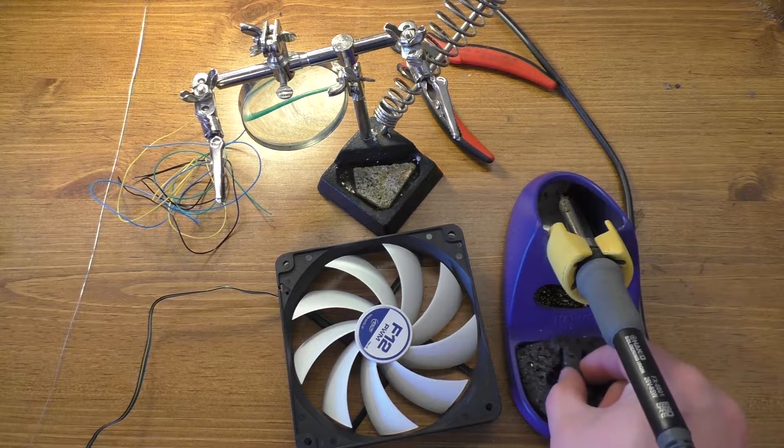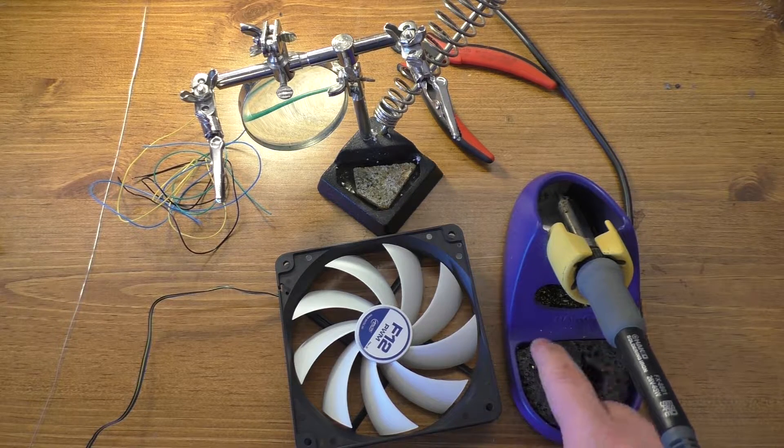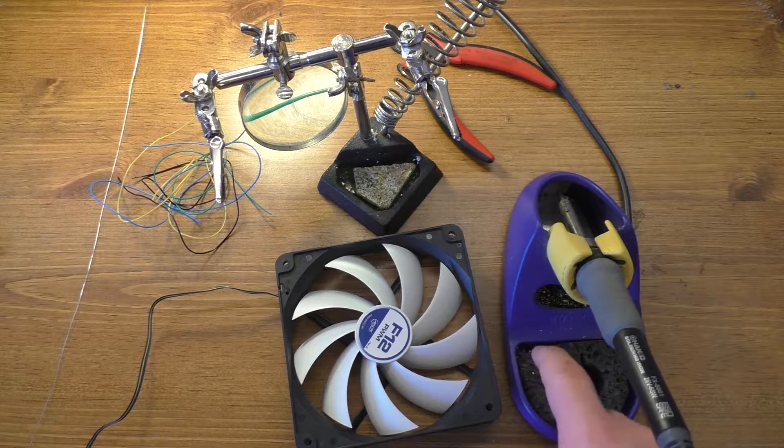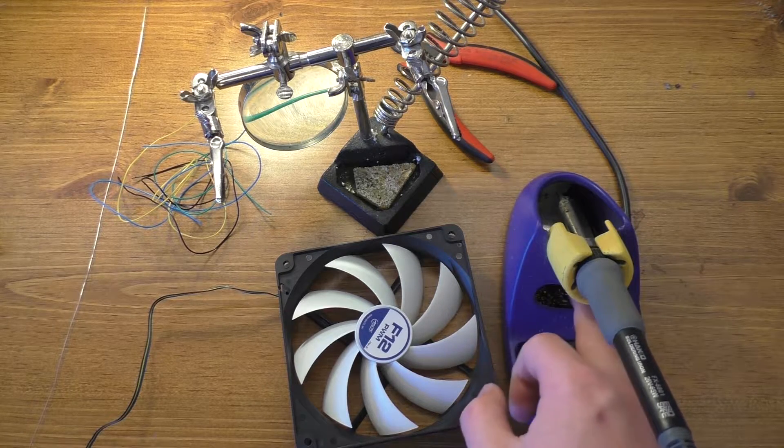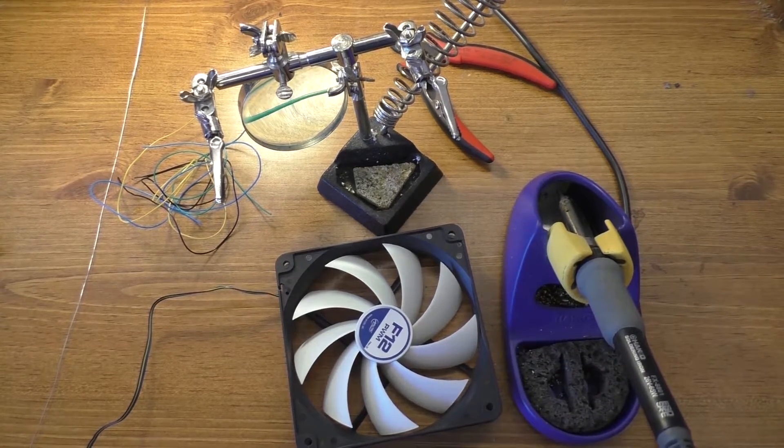You'll also need something to clean your soldering iron tip with, that being, in this case, the wet sponge. And I also do have the brass shavings thing. Either one will work just fine.